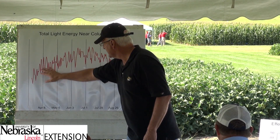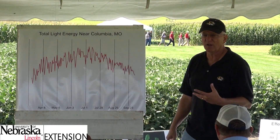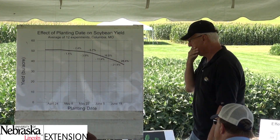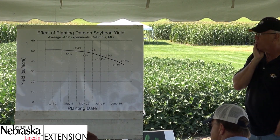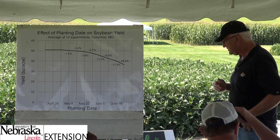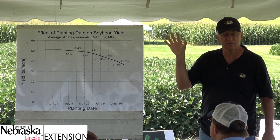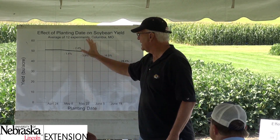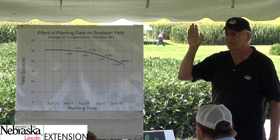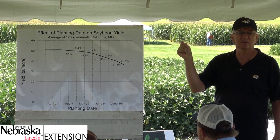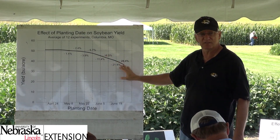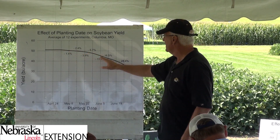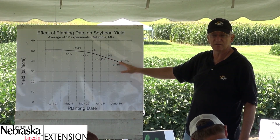Energy is what we grow crops for. Here's our data on planting date — one of the things planting date does is move seed filling into the longer days of the year. This is our response, and this is just Columbia work, an average of 12 experiments. In April and early May there's not much effect, but as we get into May it starts to decrease in yield, and that decrease becomes greater as we get later in the season.